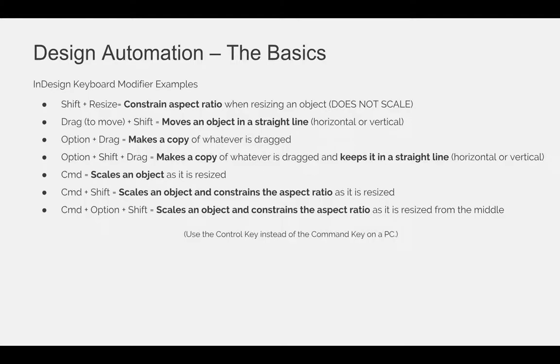There are some ways to make sure that when you resize something it looks better. If you press the Shift key as you're resizing, you'll constrain what's called the aspect ratio — the ratio between the width and the height of your object. So as the width gets bigger, the height gets bigger, but it's still only constraining the aspect ratio. It's not scaling, so that 2 point stroke is still only going to be 2 points.